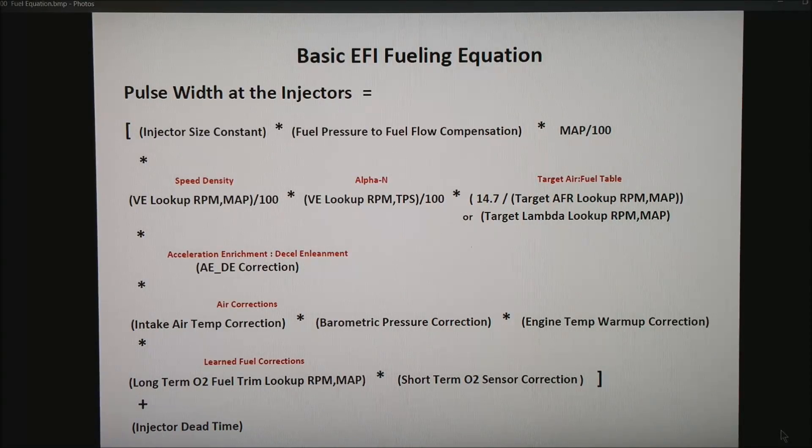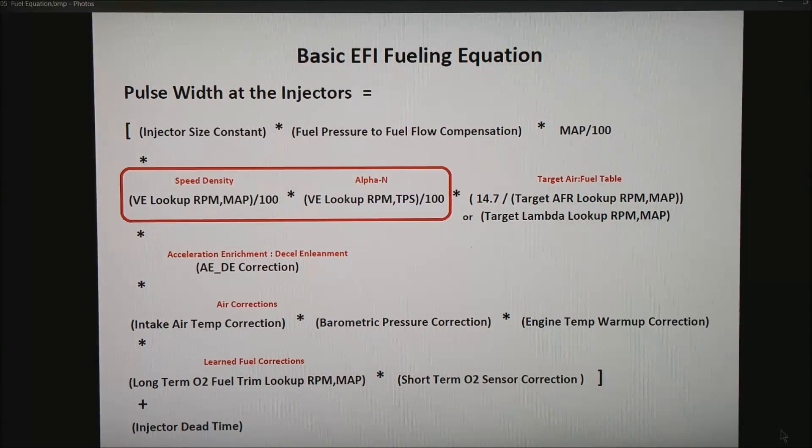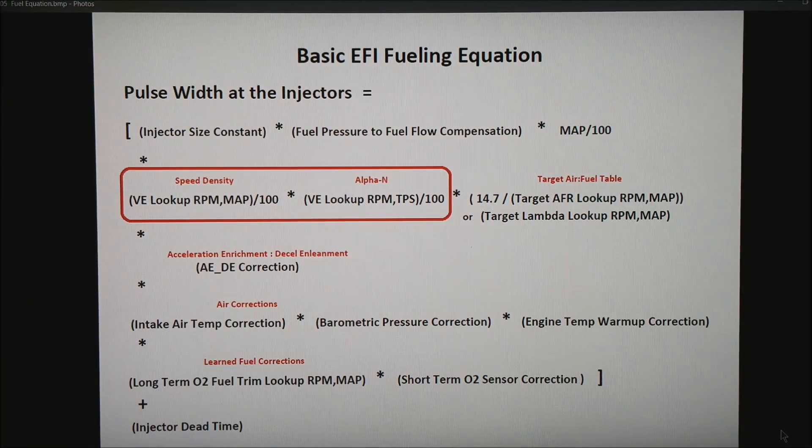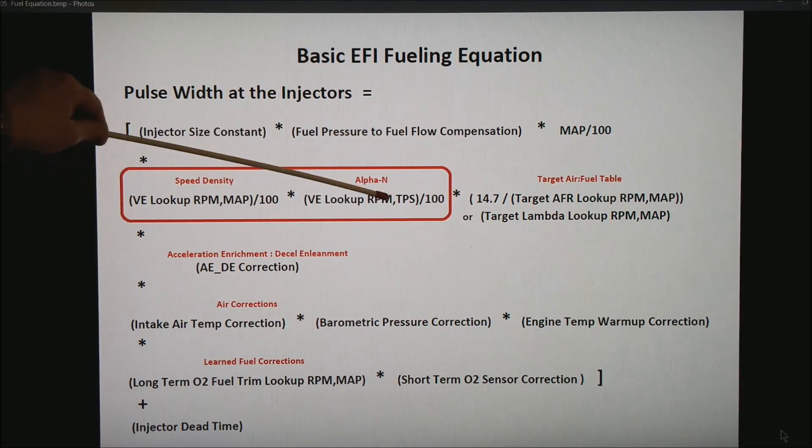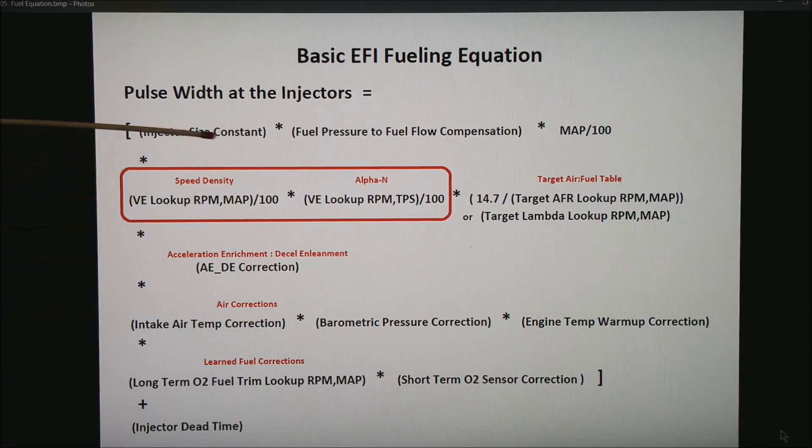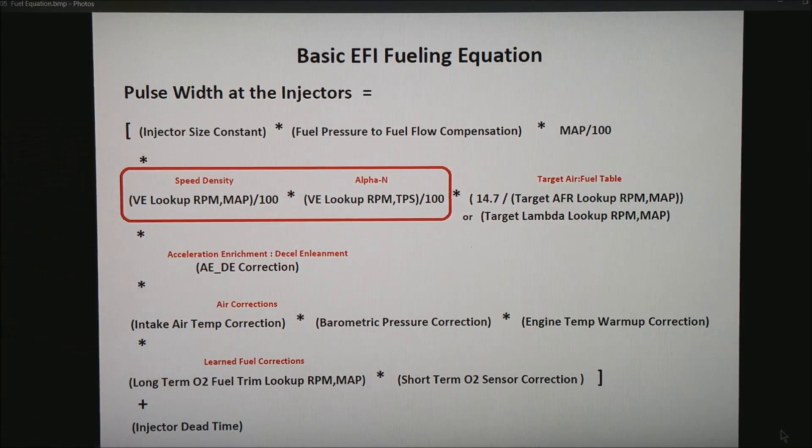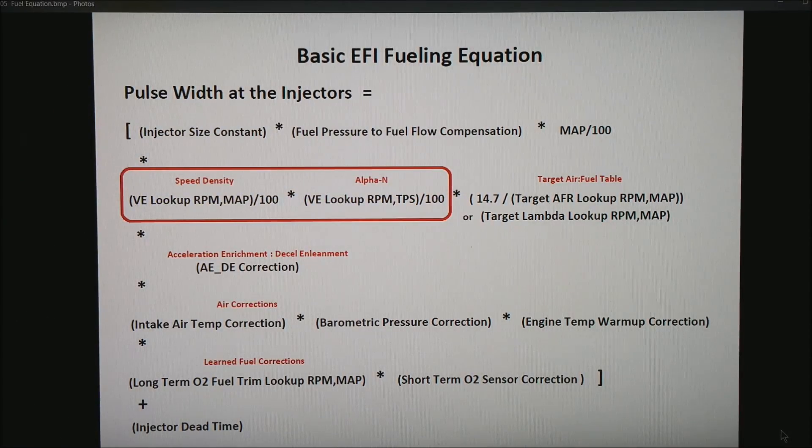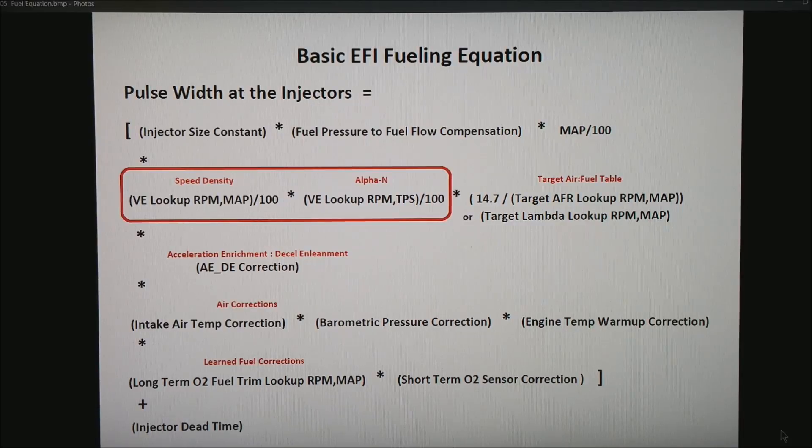This is the basic fuel equation. The part we're talking about today is the speed density times the alpha n. What we're essentially doing is going to be turning on both pieces of these where they multiply by each other. Speed density is your primary tuning method and then we're going to use alpha n or possibly mass air flow as a second correction.